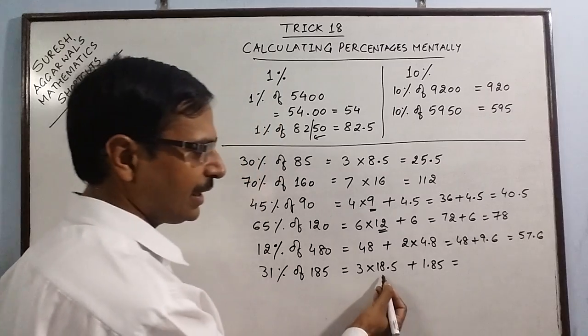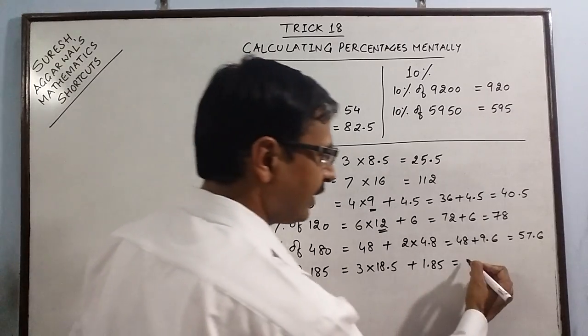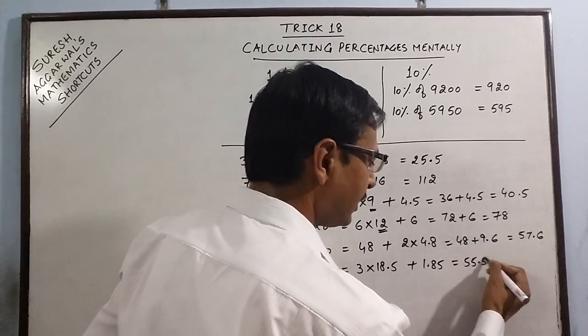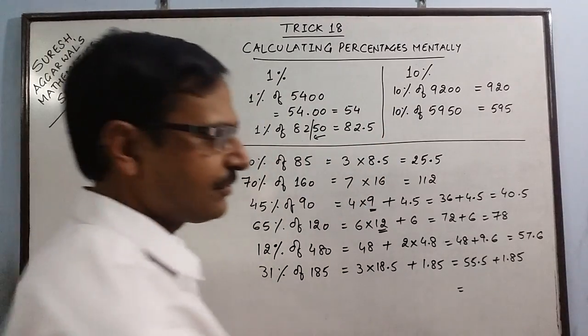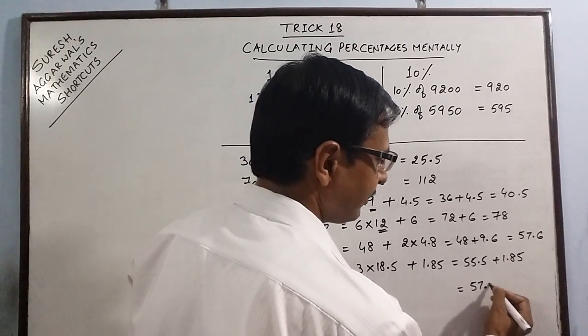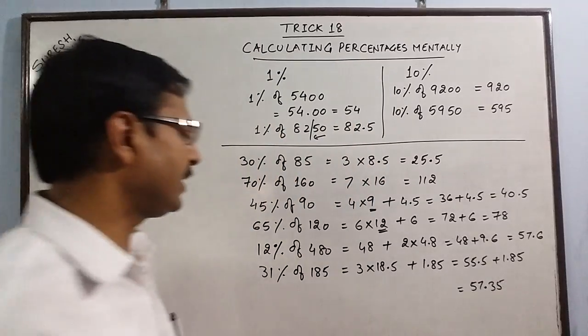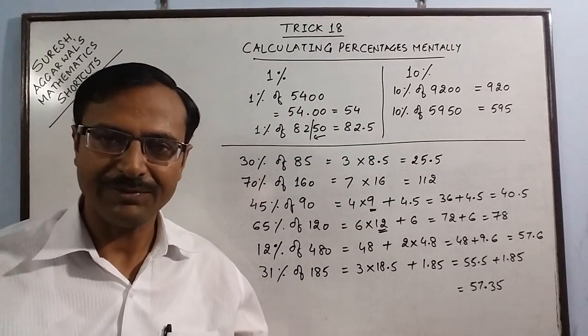So 3 times 18.5 is 55.5, plus 1.85. This gives us 57.35. So 31% of 185 is 57.35.